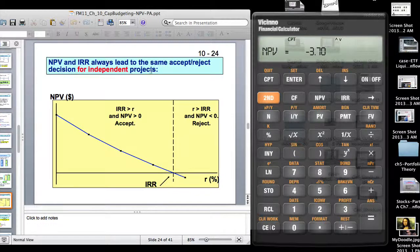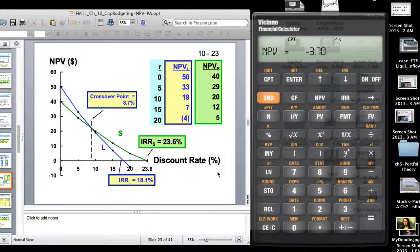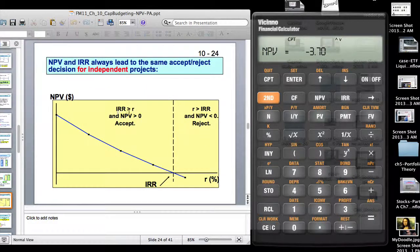NPV and IRR, they always lead to the same accept or reject decision for independent projects. At this point here, internal rate of return is given by this point of intersection with the blue line. The internal rate of return, which I think is 18 percent here, that's greater than your discount rate. So you accept it.